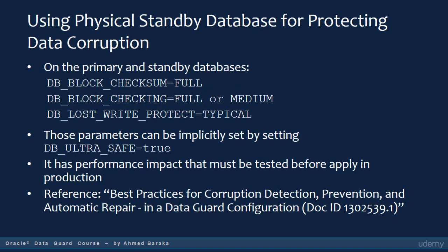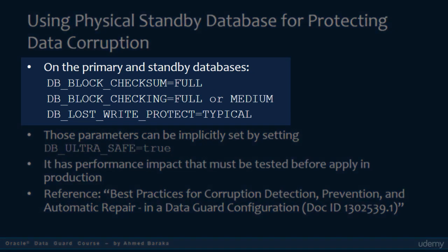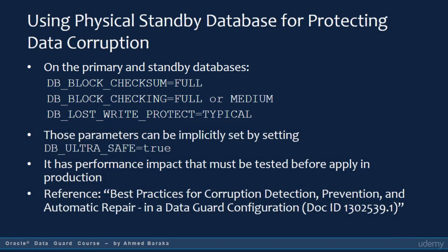If you would like to use Physical Standby Database for protection against data corruption, consider setting the DB_ULTRA_SAFE parameter to TRUE in both databases. This parameter sets the values of DB_BLOCK_CHECKSUM, DB_BLOCK_CHECKING, and LOST_WRITE_PROTECT. However, this usually has a slight performance impact, so you should test its influence before applying it in production. For further details, refer to Document ID 1302539.1 on the Oracle Support site, titled 'Best Practices for Corruption Detection, Prevention and Automatic Repair in a Data Guard Configuration.'